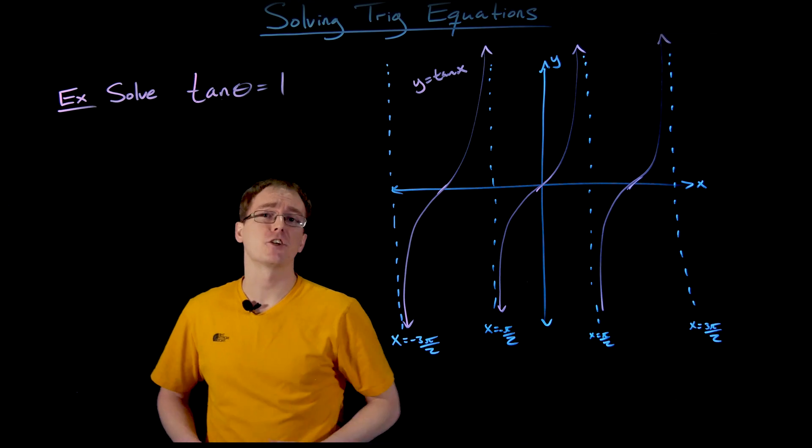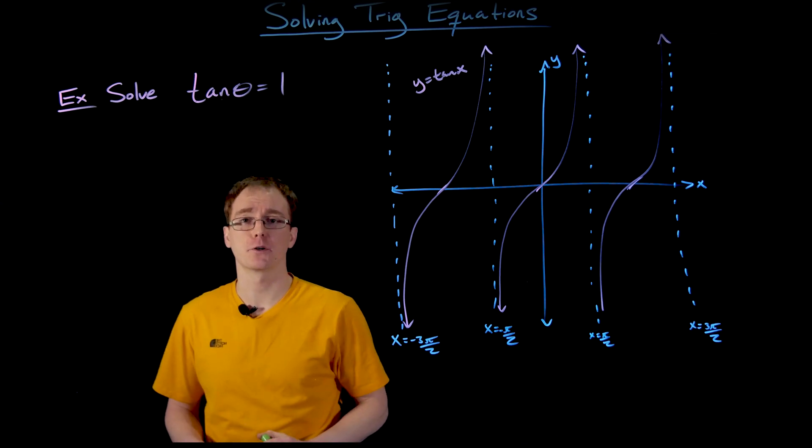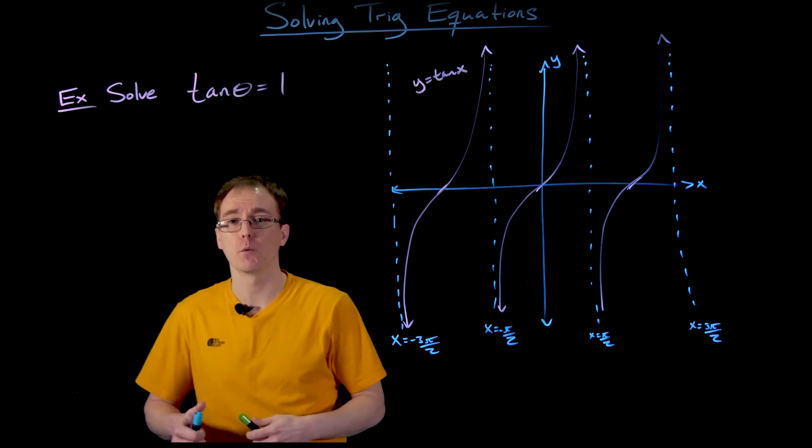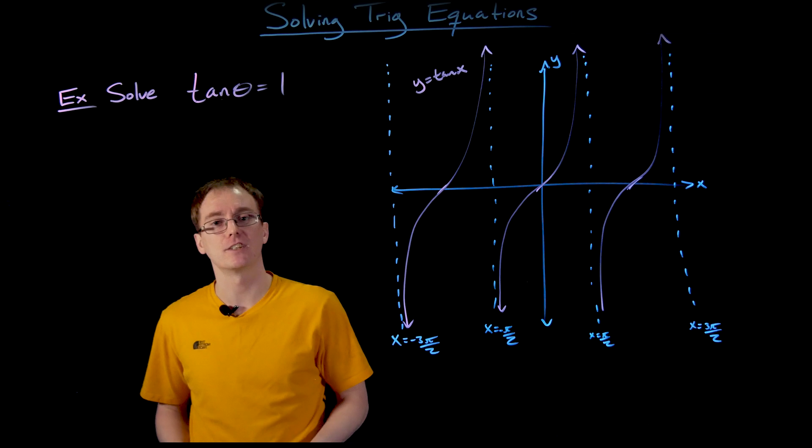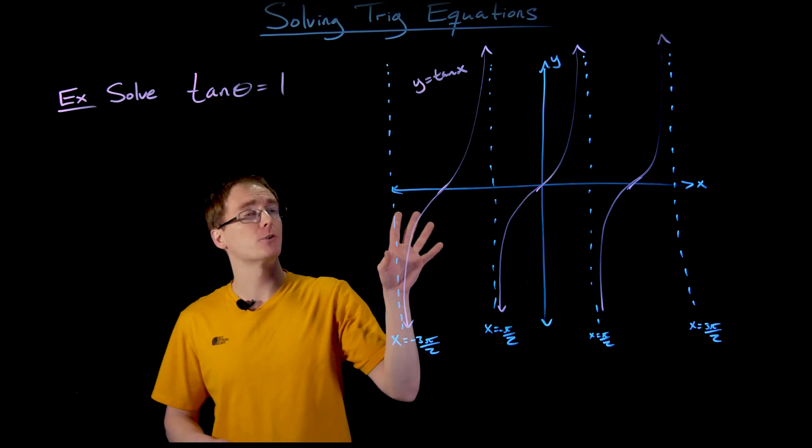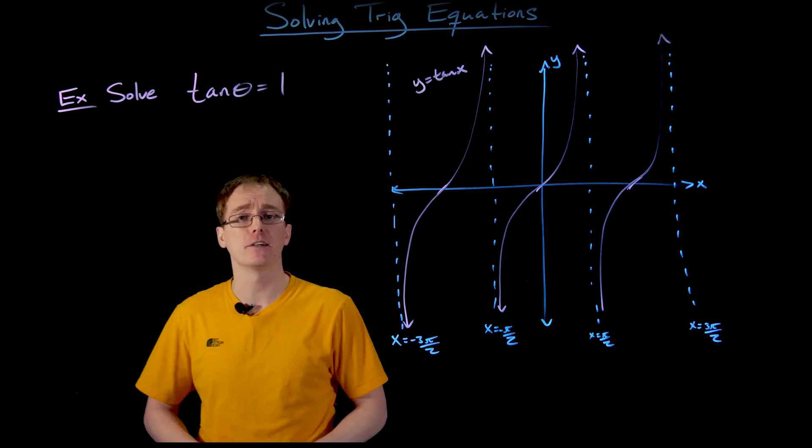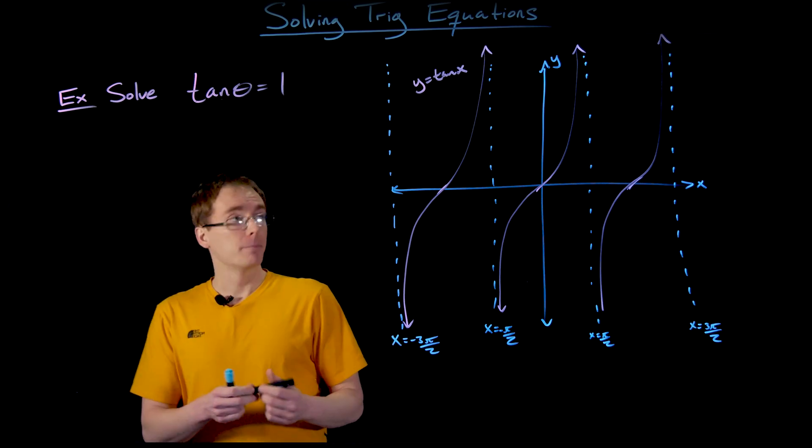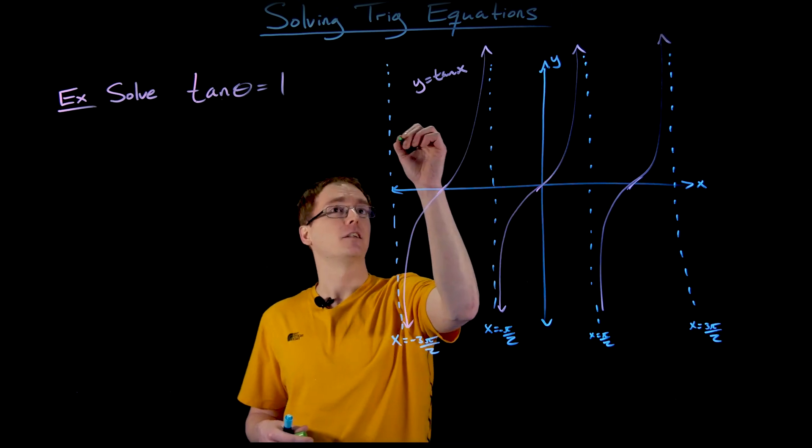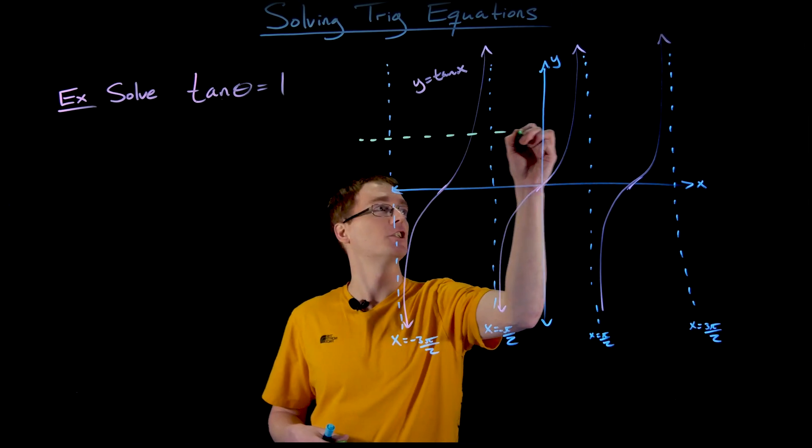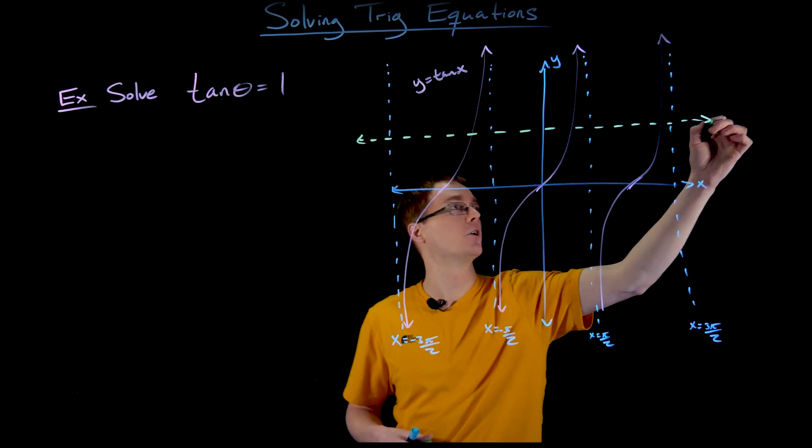We want to figure out when the tangent function has an output of positive 1. We're ignoring the unit circle because tangent is the ratio of y and x coordinates, which is harder to identify than a single coordinate. When is tangent equal to 1? That's like asking when does the graph of tangent intersect the horizontal line at y equals 1.